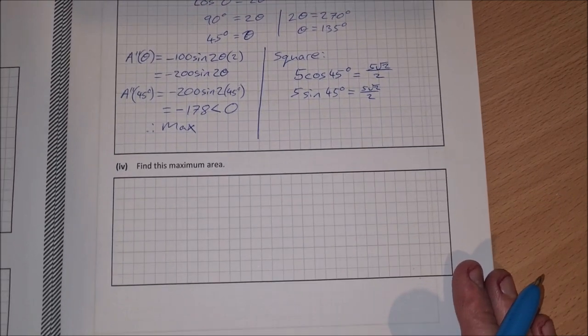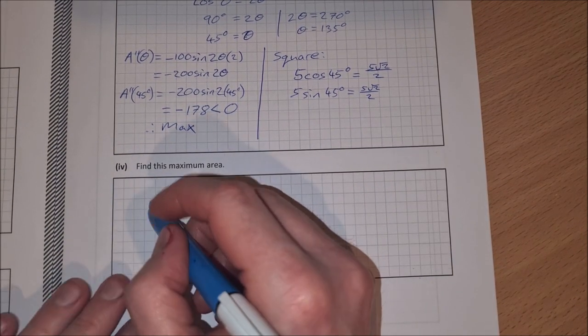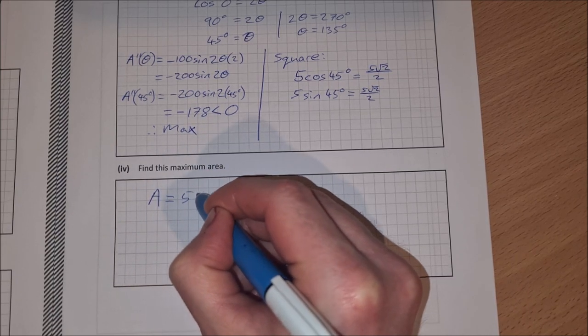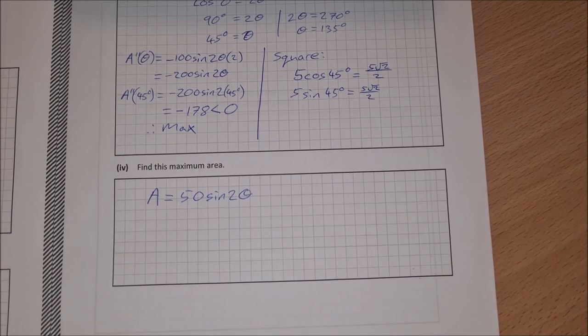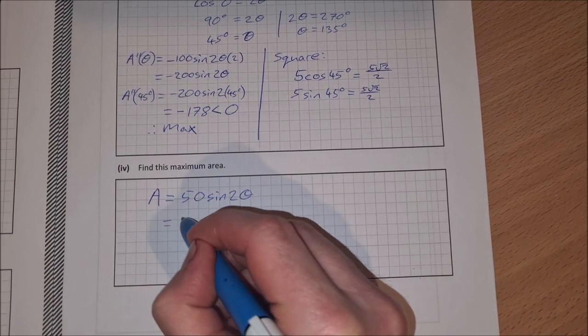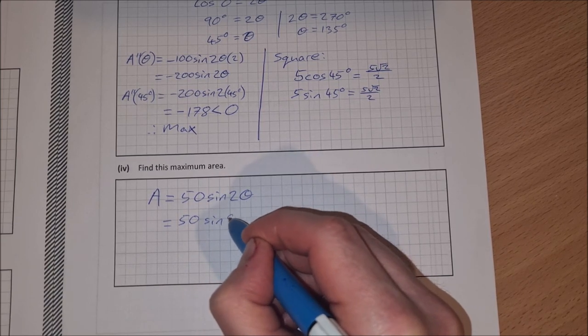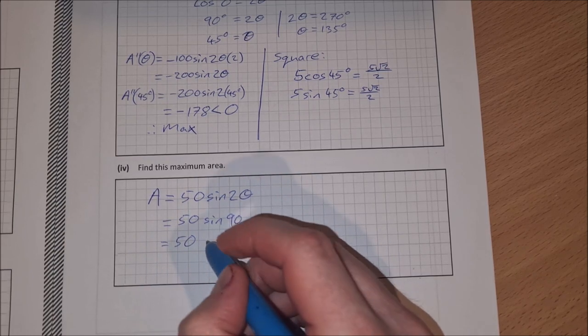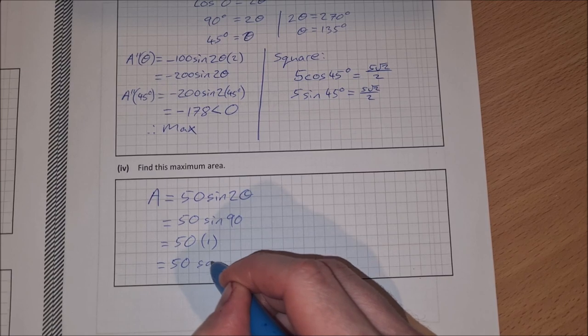And then the last part, part 4, find this maximum area. So the area function, again, was 50 sine 2 theta. So all we have to do is sub in 45 degrees. So that's equal to 50 sine of 2 times 45, which is 90. So that's equal to 50. Sine of 90 is 1. So 50 times 1. So it's equal to 50 square units.